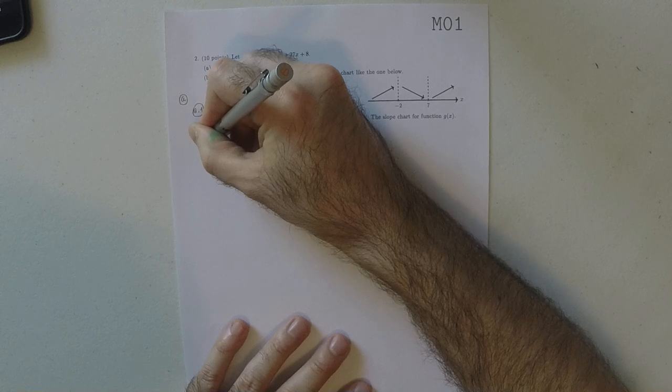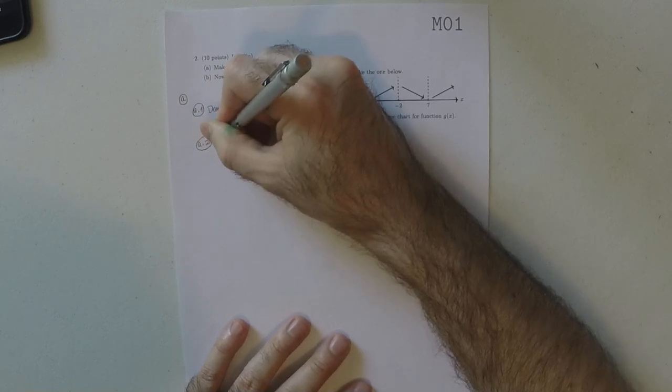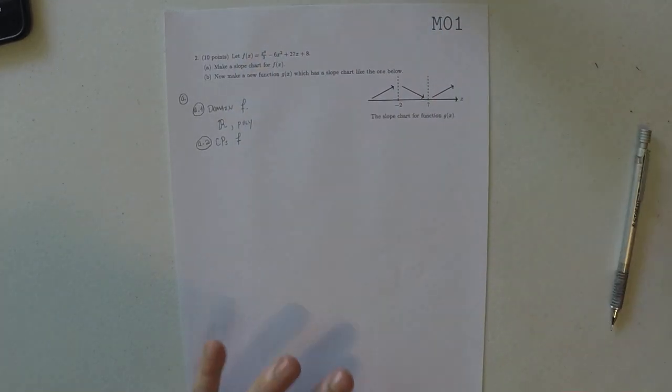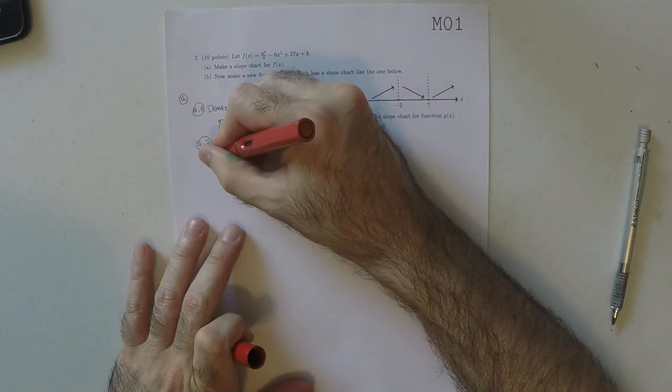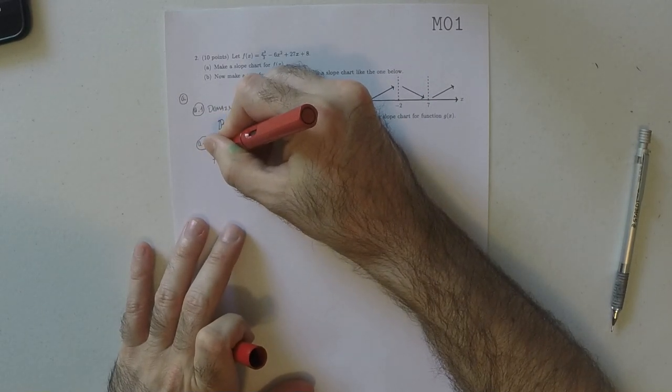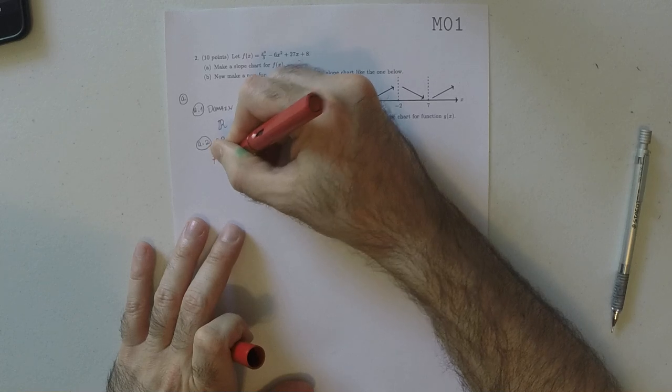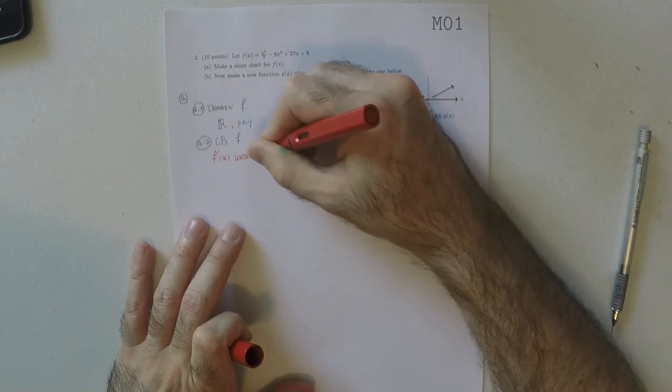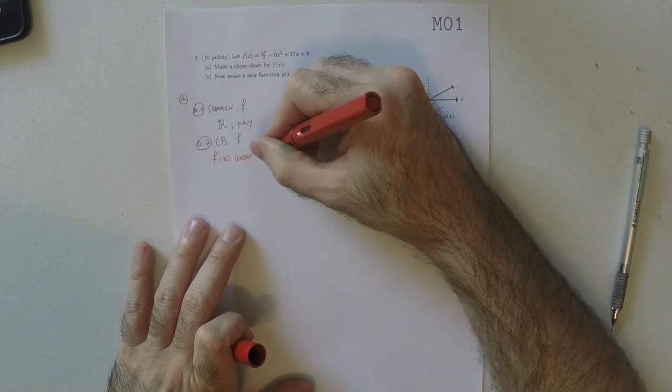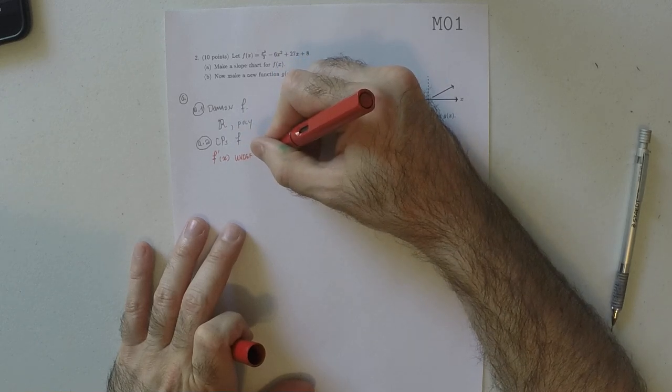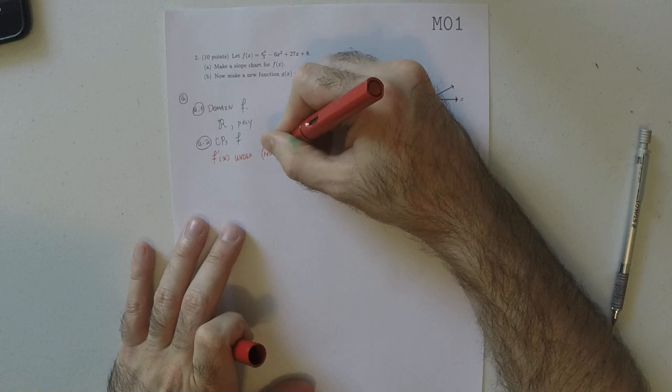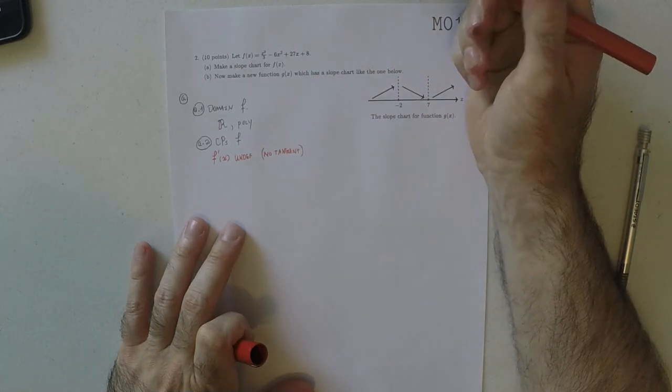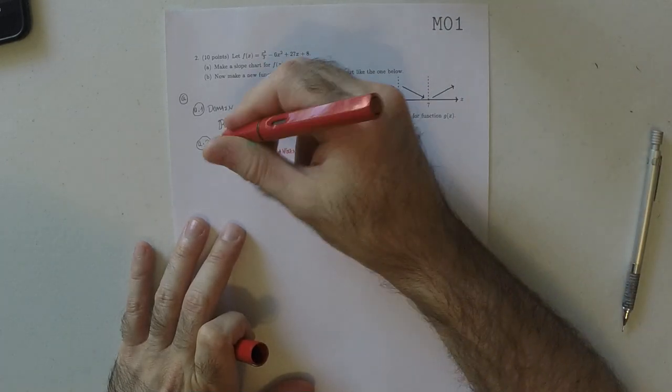Second, we want to find the critical points of F. So there's two kinds of critical points, to remind you. There's the kind where the derivative at X is undefined. From a geometry point of view, that means that there's no tangent. So a point can be critical if there's no tangent.